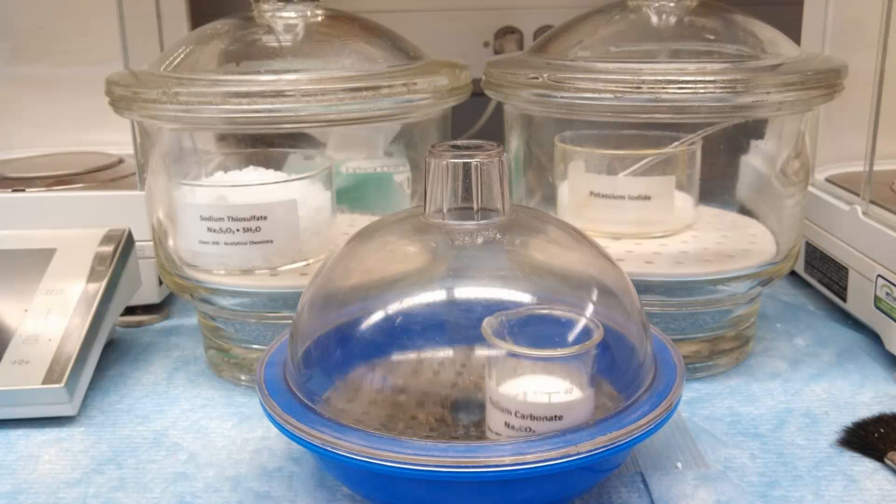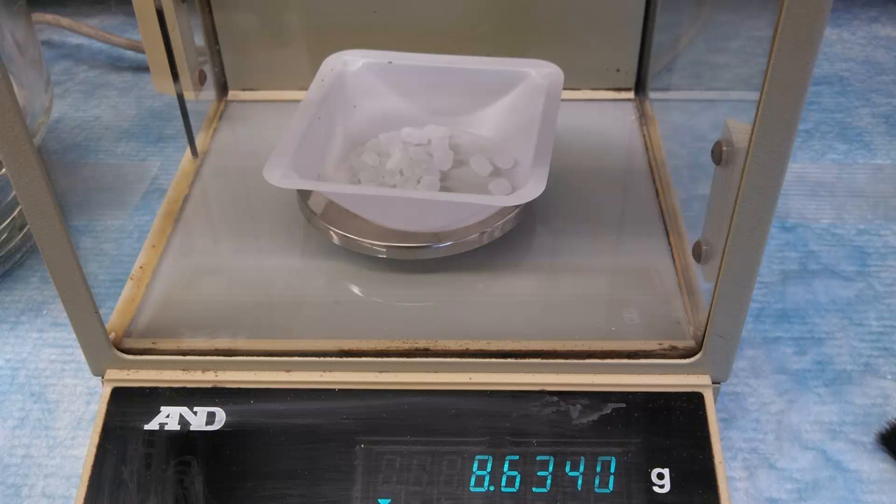For the sodium thiosulfate, your procedure says to weigh it directly into an amber glass bottle, but you're not going to do that. You're going to use a weigh boat, one of the big weigh boats, and these will be on the counter, and weigh out your approximately 8.7 grams. You'll notice that the sodium thiosulfate is in big chunks, and so if you can't get exactly 8.7, don't worry about it. Get as close as you can. You're going to standardize the titrant, so it doesn't necessarily matter.